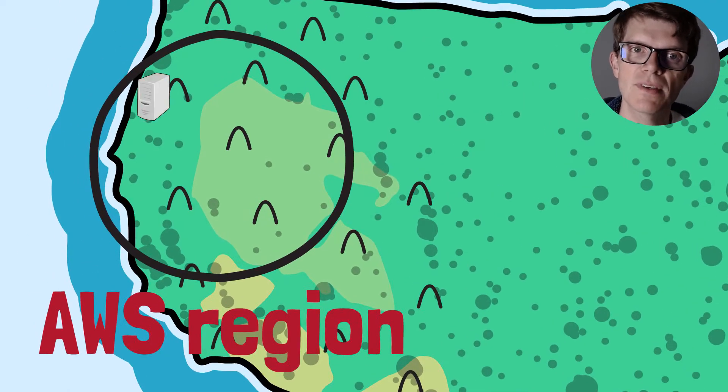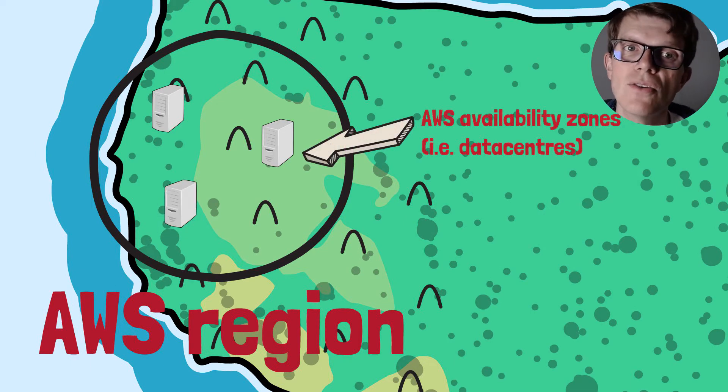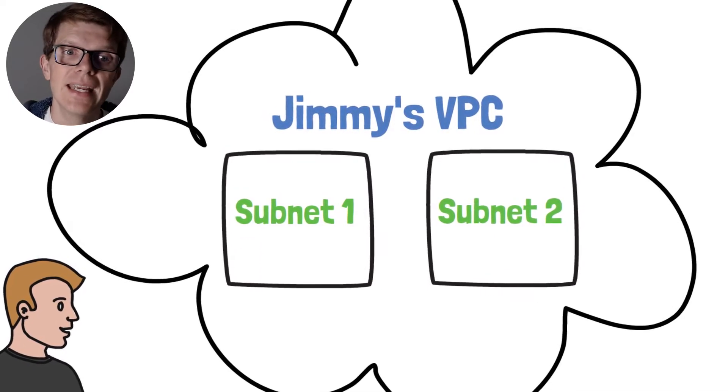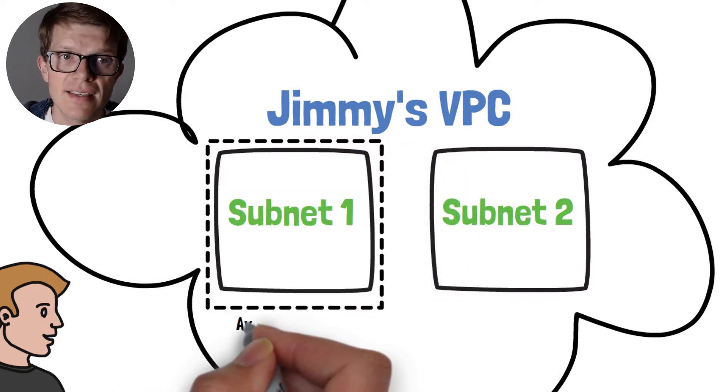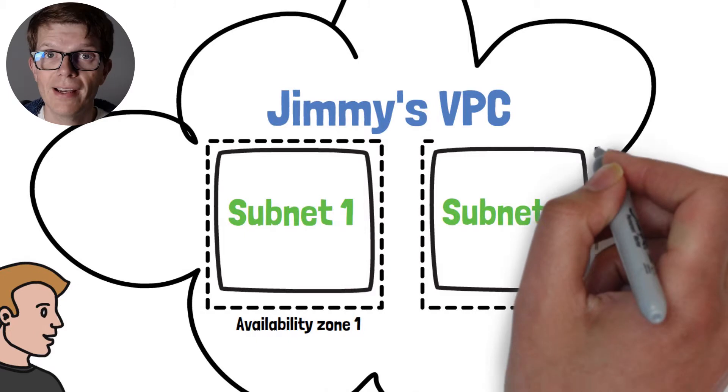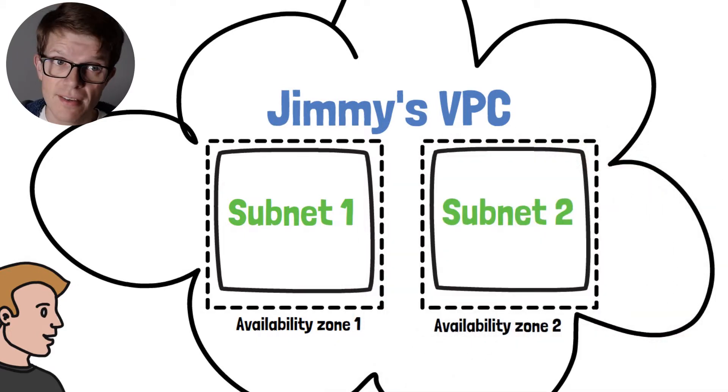By deploying into different availability zones, it enables you to create highly available fault tolerant services. Since a subnet can only exist in a single availability zone, to deploy across multiple availability zones you need multiple subnets. The second reason Jimmy might split his VPC is to improve the security of one of the subnets by hiding it from the internet. This is achieved by creating what's called a private subnet — a subnet which can't be directly accessed from the internet and doesn't have direct access to the internet. This is perfect for deploying databases or other back-end services.